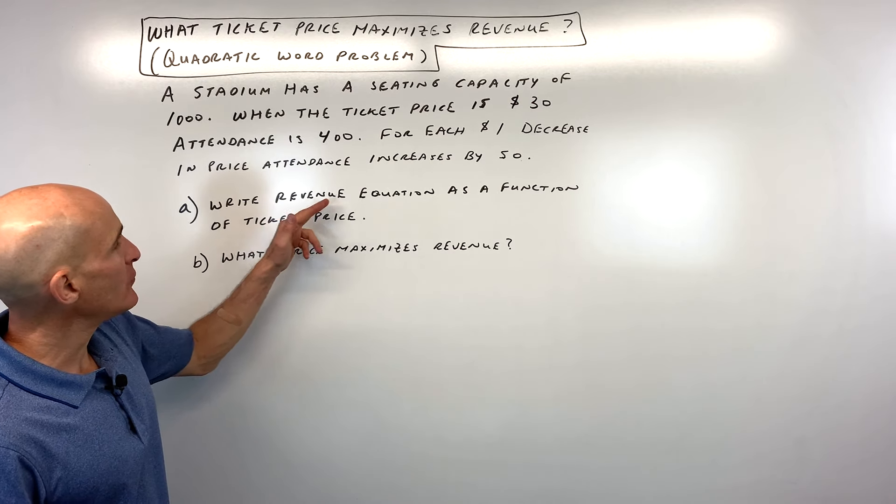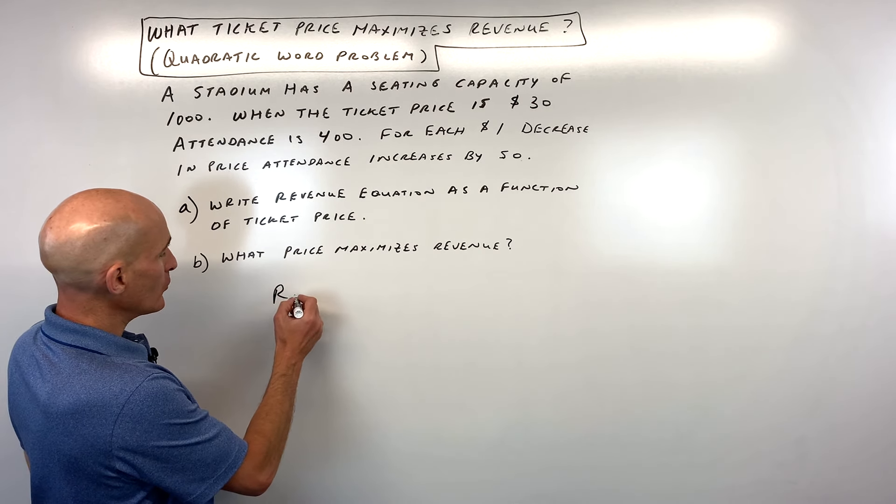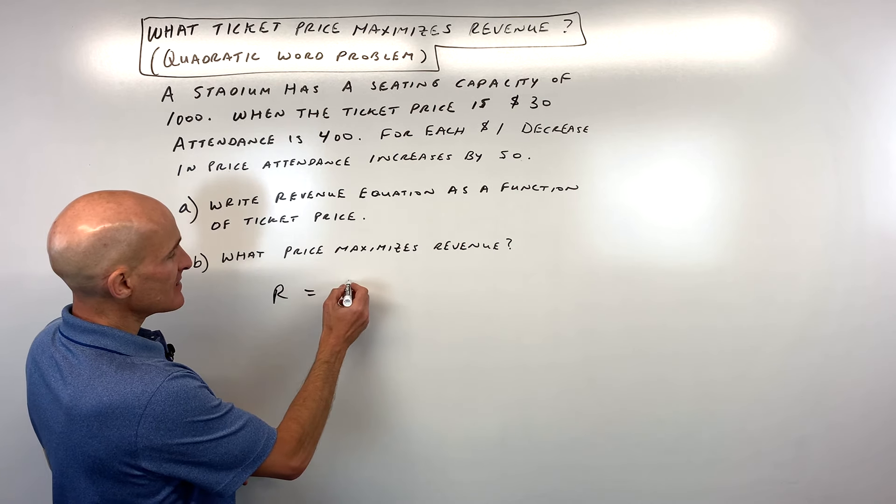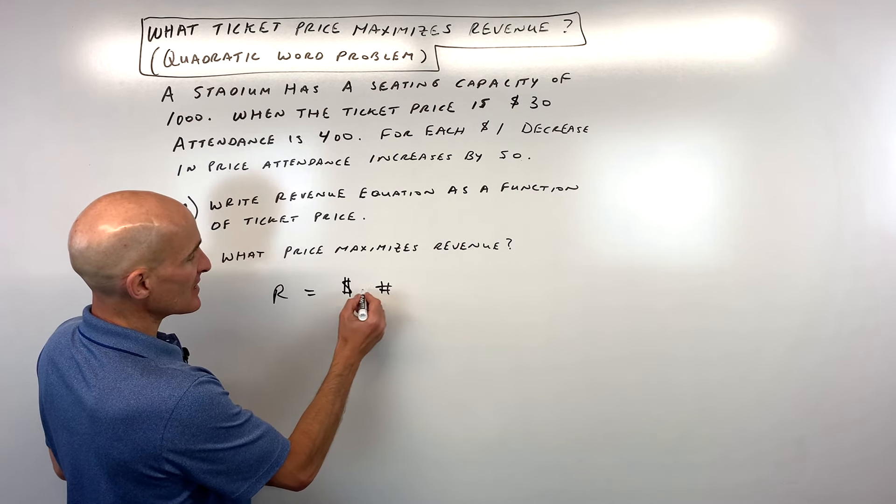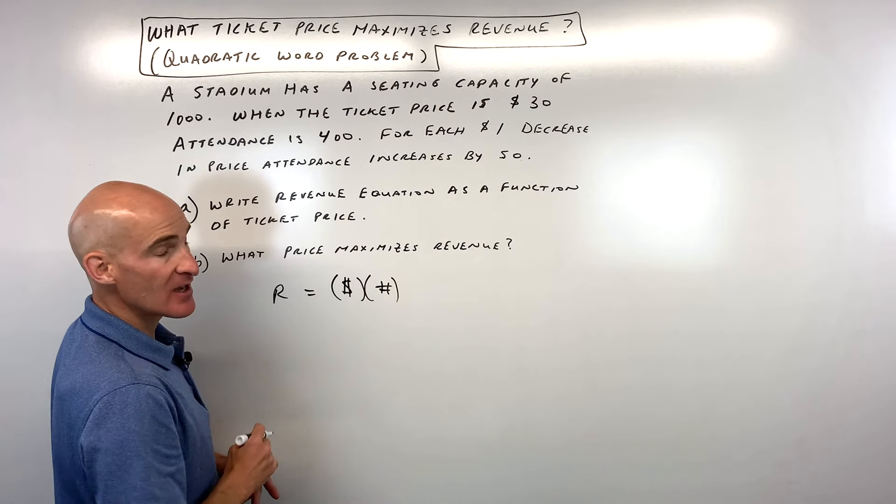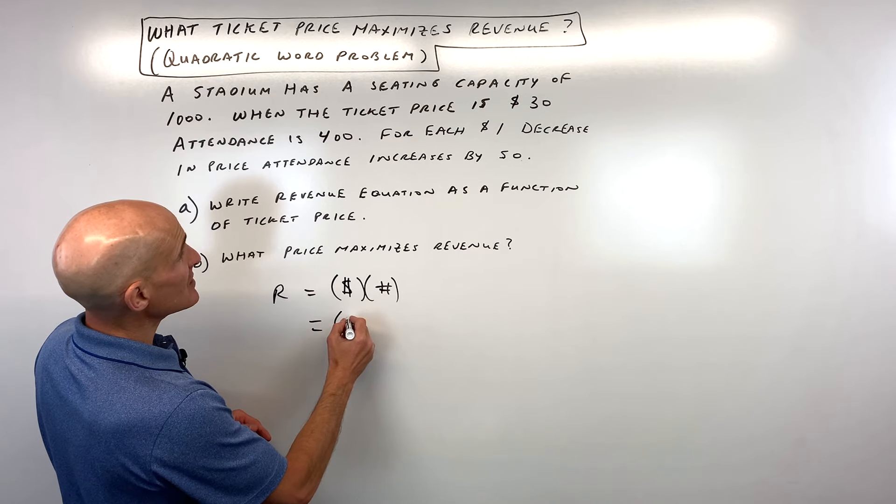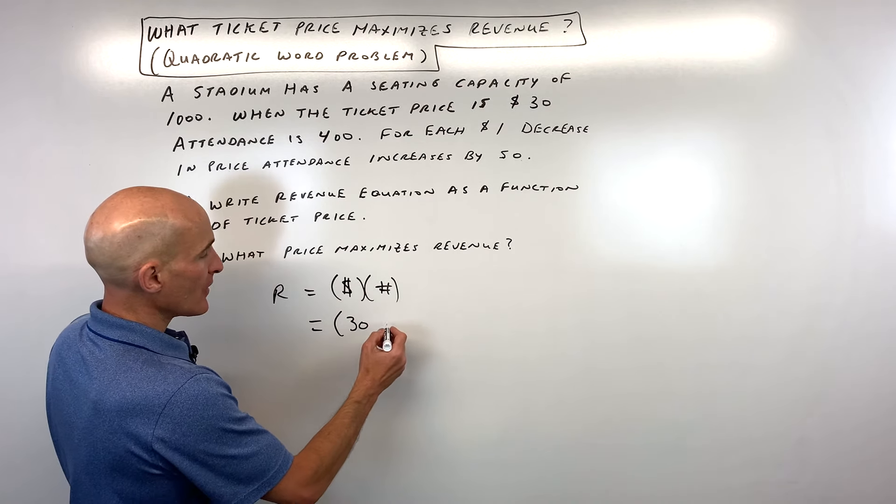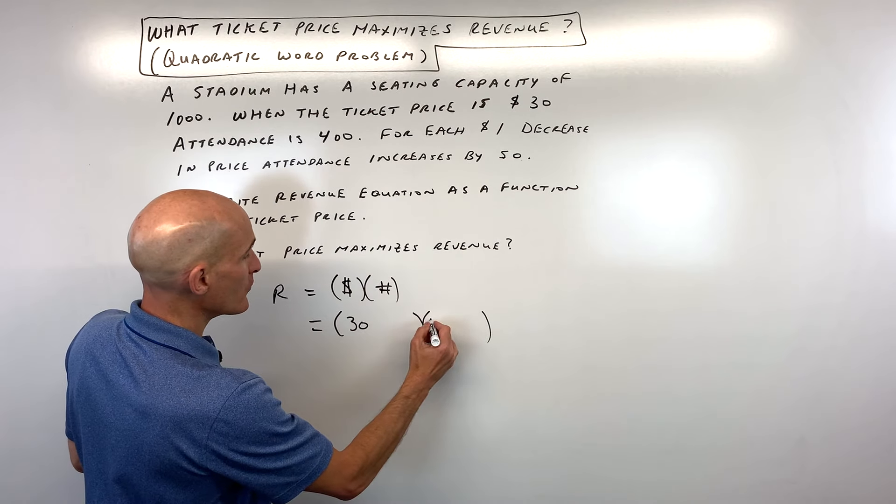So let's start off by writing the revenue equation as a function of the ticket price. Now remember revenue is the number of tickets times how much each ticket is. So in this case a ticket is thirty dollars and how many people are attending? Four hundred people.